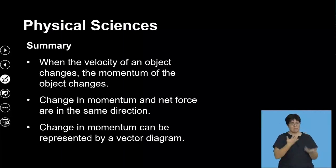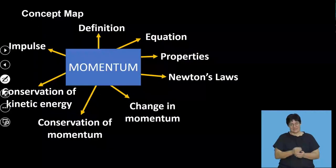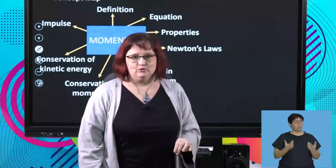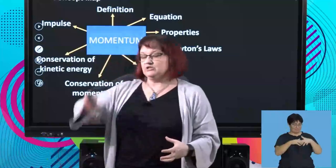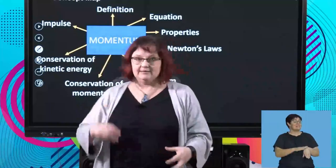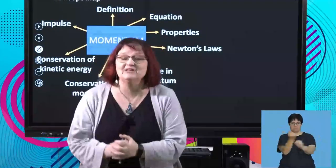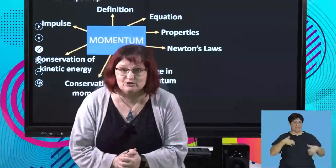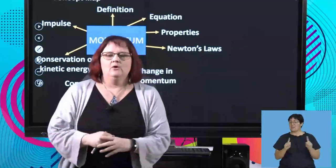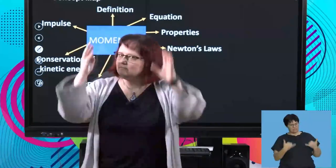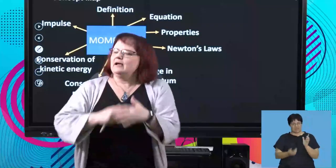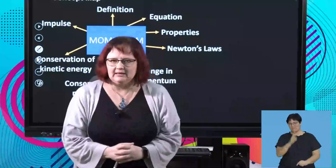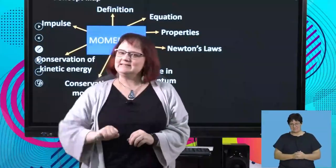When the velocity of an object changes, the momentum of the object changes. Changing momentum and net force are in the same direction. Changing momentum can also be represented by a vector diagram. That's the end for today — we've done a lot. Next time, we're going to look at collisions and explosions. Go and revise what we've gone through. I promise you, you can get this. I'll see you next time.